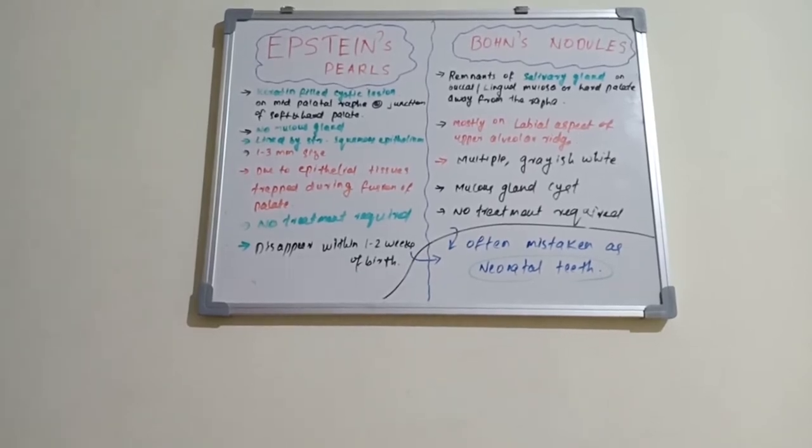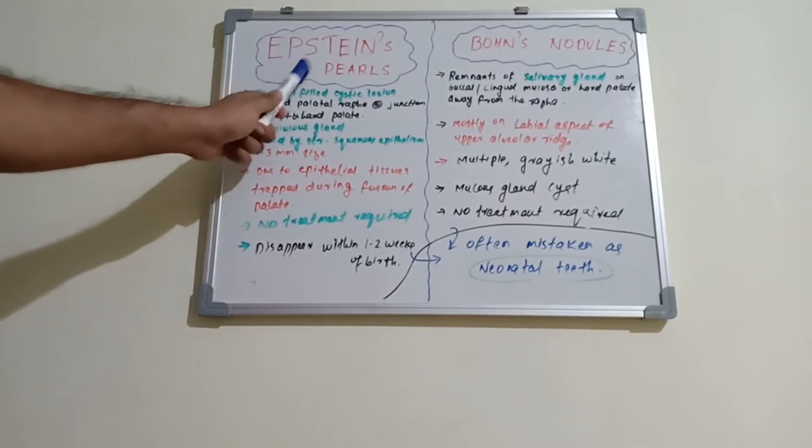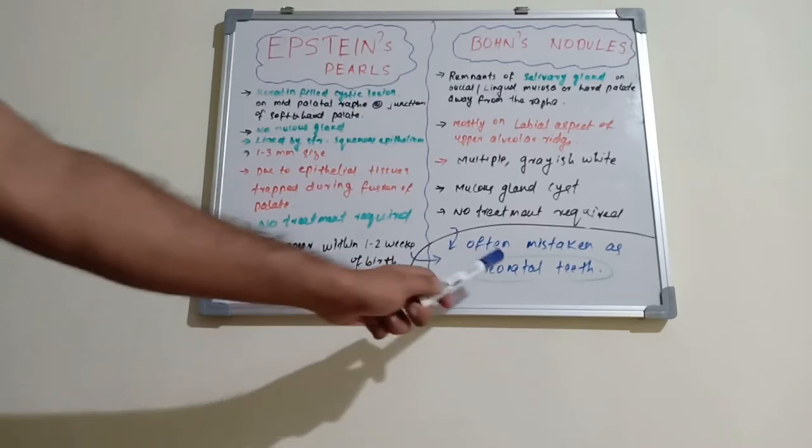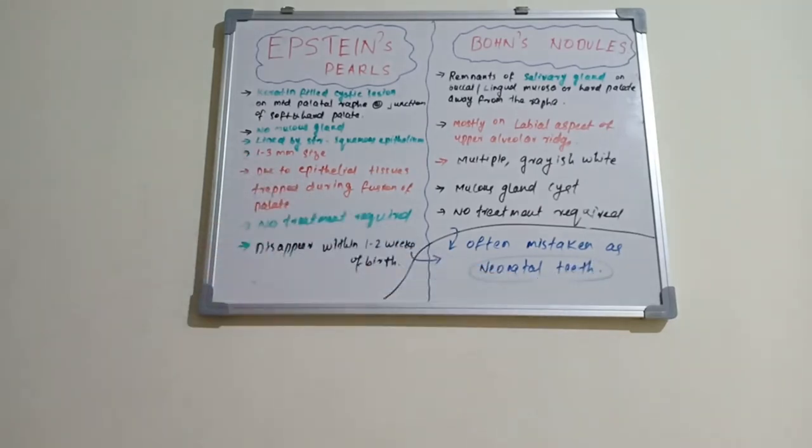Hello everyone, welcome back to a new session on dentistry and more. Today's topic is Epstein pearls and Bohn's nodules. They are seen commonly in newborns' oral cavity as cystic lesions and are often mistaken as neonatal teeth, but actually are not neonatal teeth.